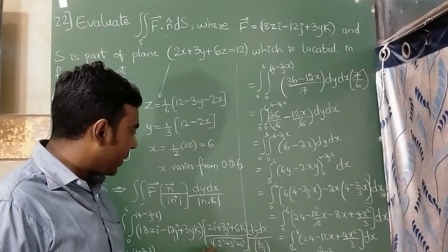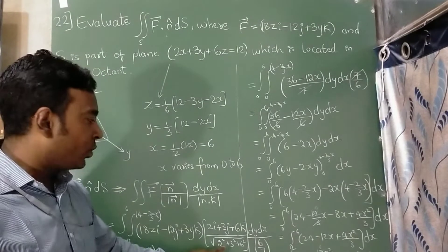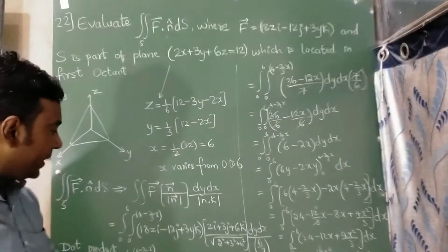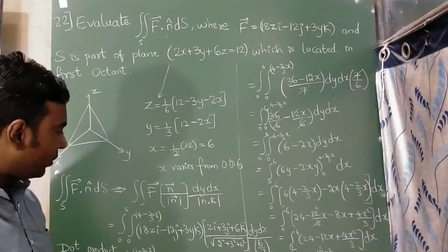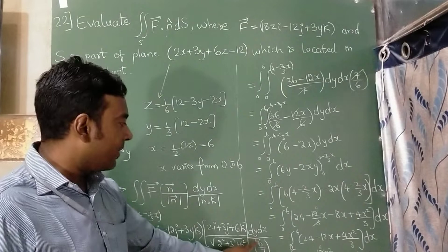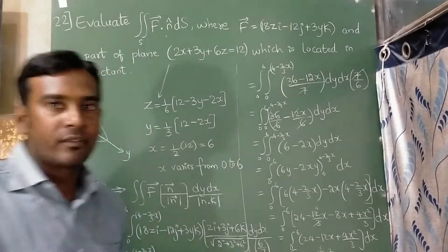This 7 has come from this square root. This 2 square is 4, 3 square is 9, 6 square is 36. Altogether it is root 49. So root 49 is nothing but 7. For that reason, modulus of n k, I have written 6 upon 7.